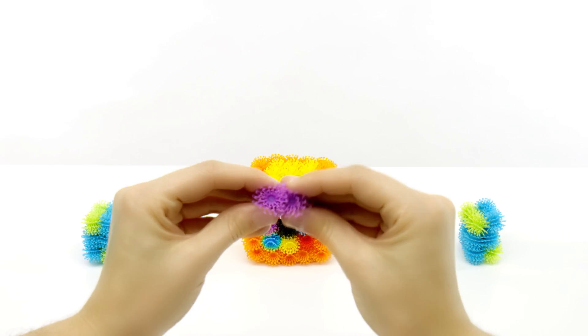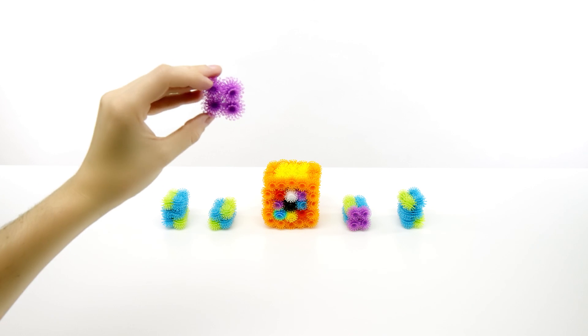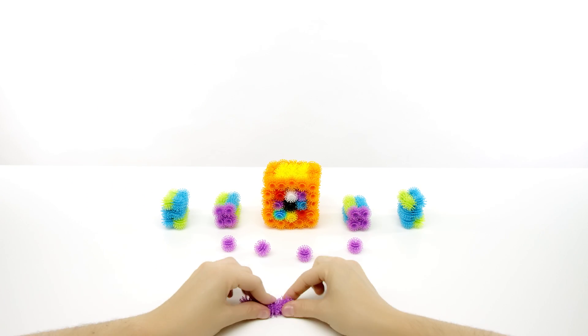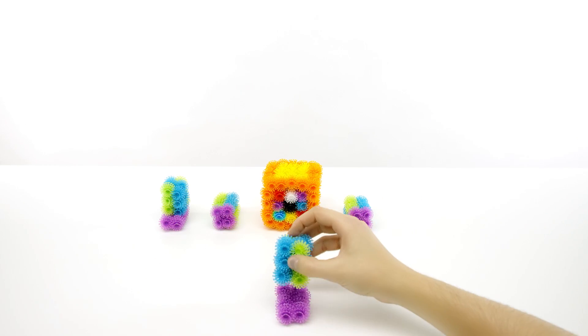Next, make a square with four purple and stick these on the end of the arms. To finish the legs, take eight Bunchems and make two chains of four. Bunch them together and stack onto each of the legs.